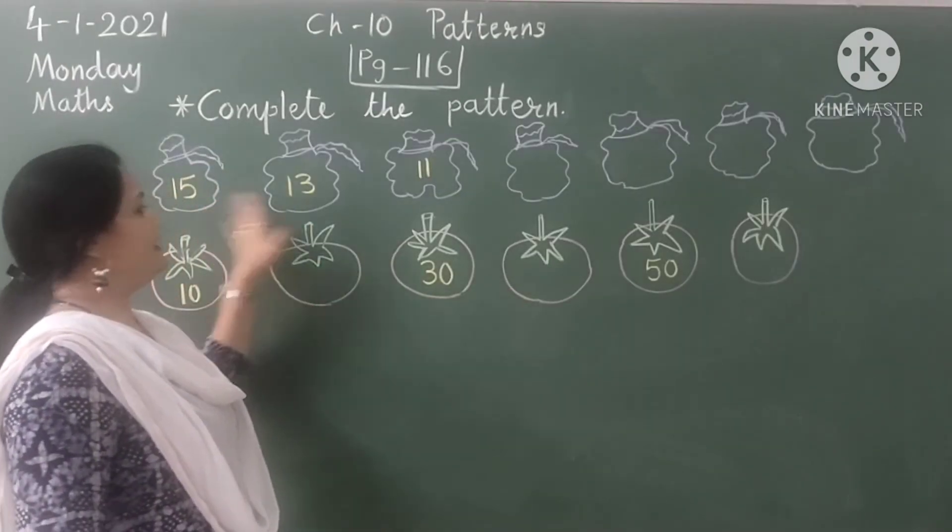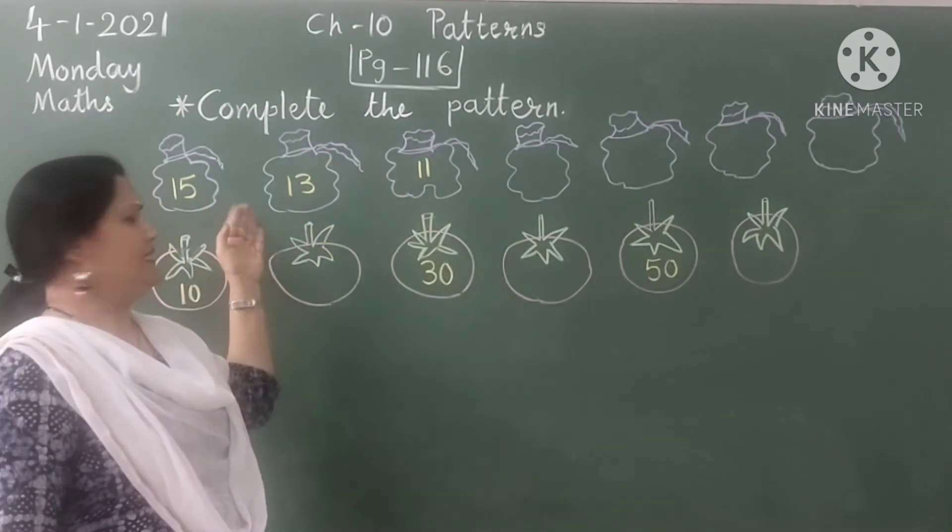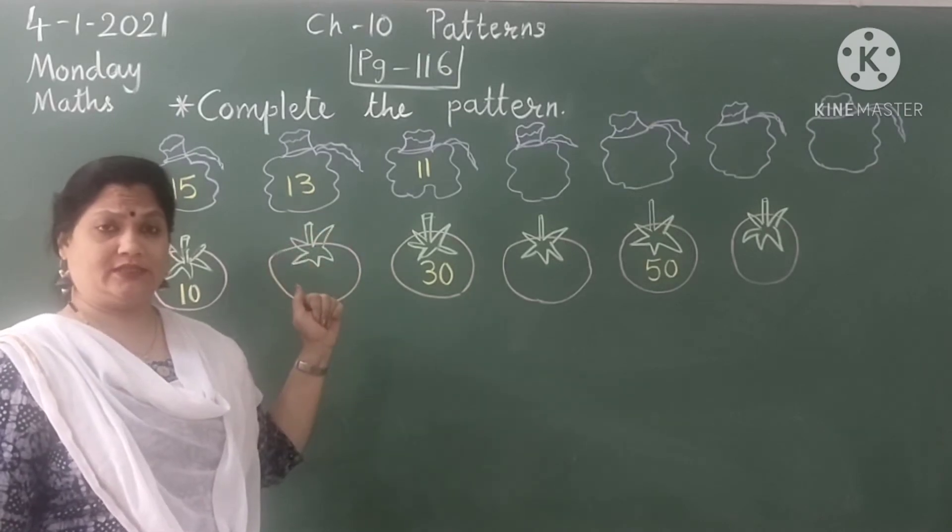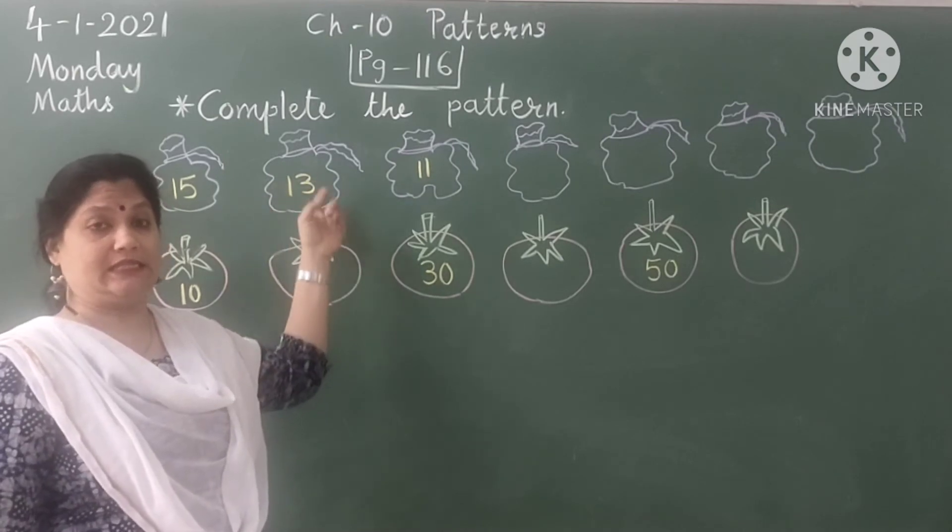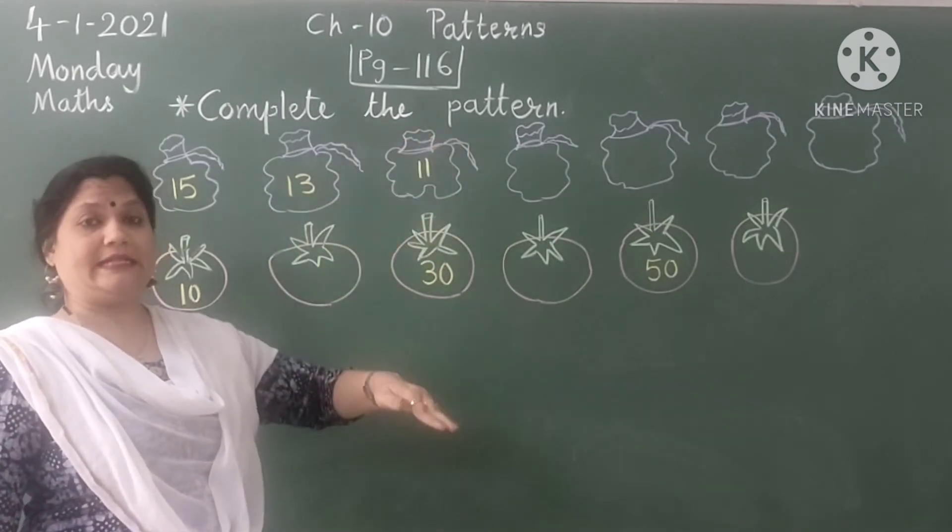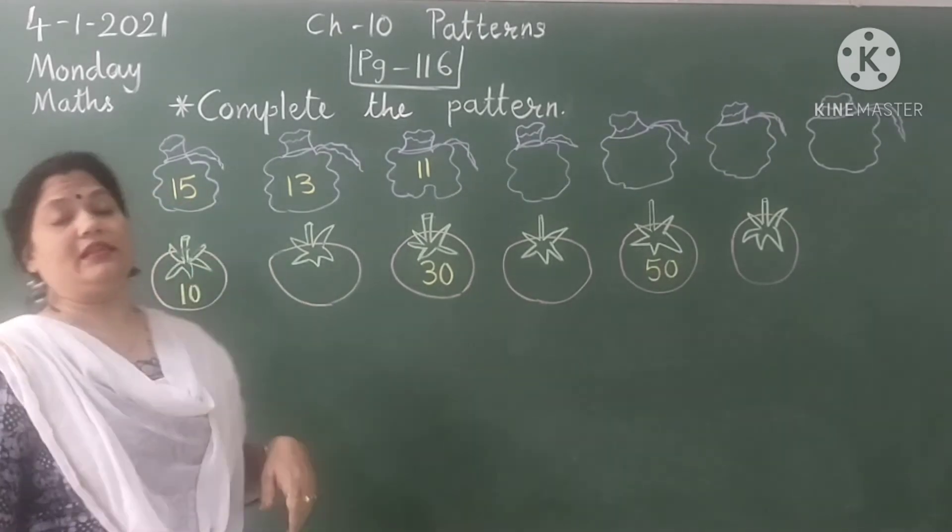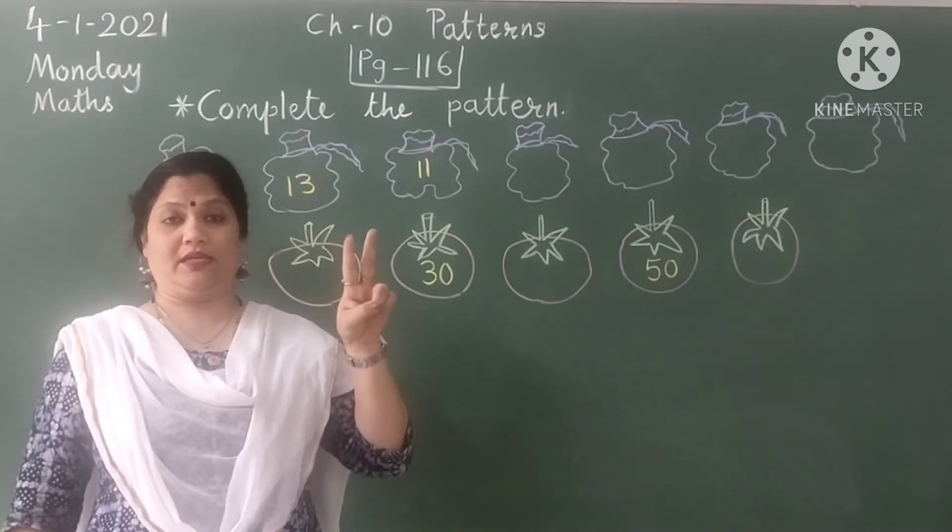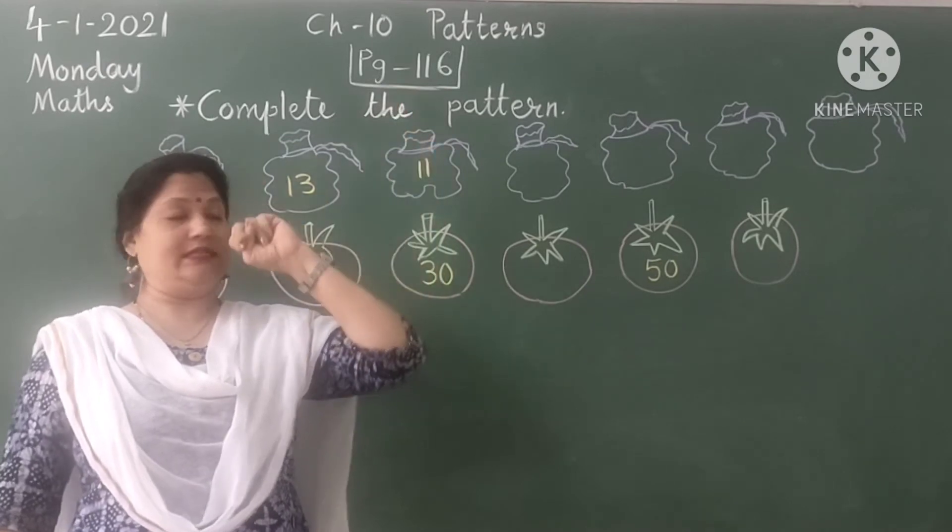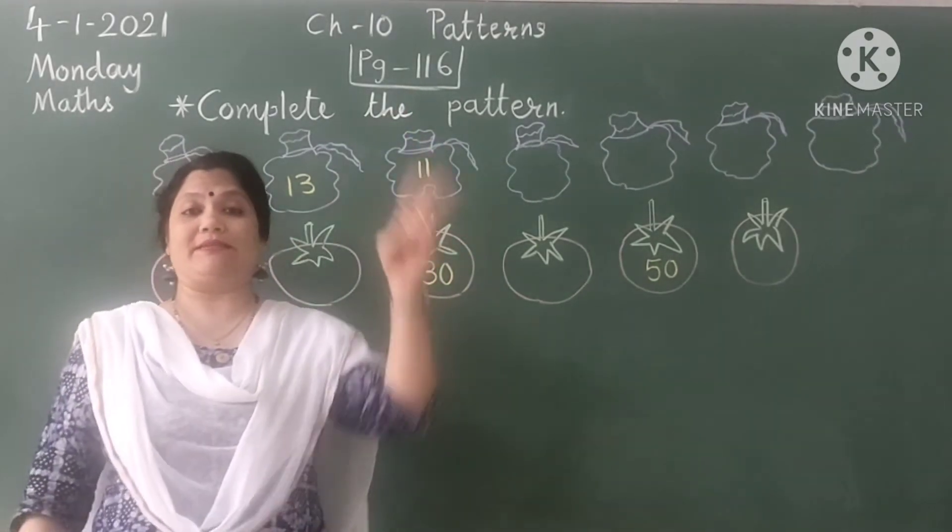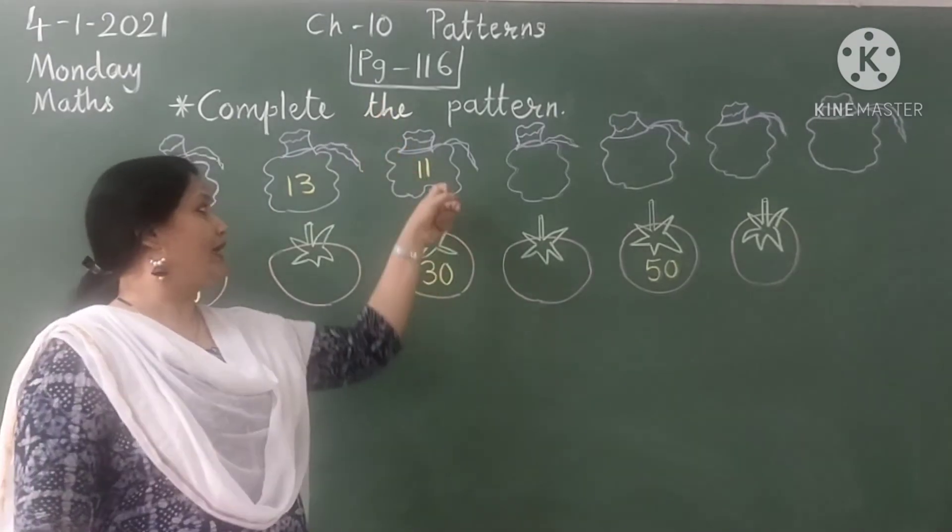Now this pattern is given. This pattern 15, 13, 11 is given. See, the numbers are written in decreasing order. Before numbers are written. 15, 13, 11. So it is in decreasing order. So let's see. In 15, if we will subtract 2 numbers. So before 15 is 14 and 13. See? In 13, we will subtract 2 numbers. So before 13 is 12 and 11. So 11 is written.